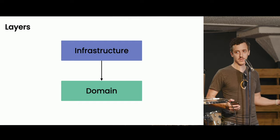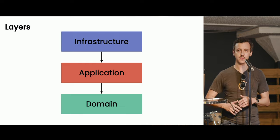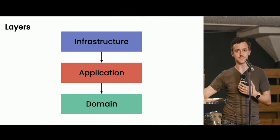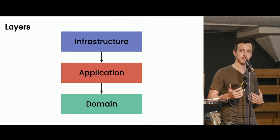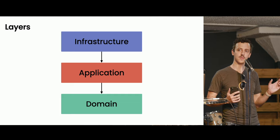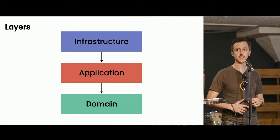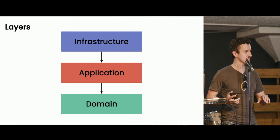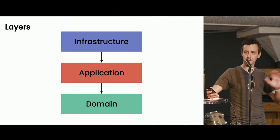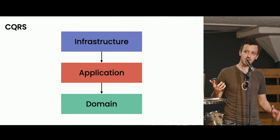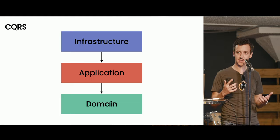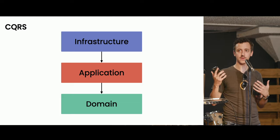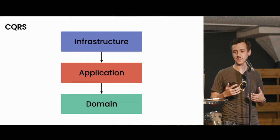We add one more layer called the application layer, which is basically a coordination layer containing all the operations our system supports — things like create user, delete user, list users. The application layer is concerned with putting together all the domain objects to actually get those things done. We end up with a nice layered architecture where the dependency direction is very clear — dependencies only go down. If we want to change a controller it doesn't affect things in the domain layer, giving us a lot of flexibility.